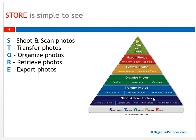Each layer has specific things associated with it that we'll cover in coming videos. In the shoot and scan layer, there are certain things to do on your camera, and also certain things to do when you scan photos — gathering your photos, looking for metadata, including handwritten metadata in your photos when you're ready to scan. The next layer is transfer photos: once we've created photos with our cameras or by scanning, we need to transfer them onto the main computer we have for our library.